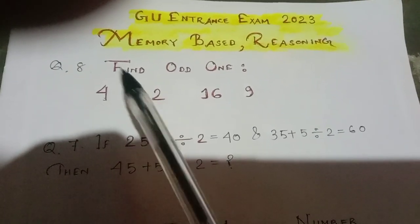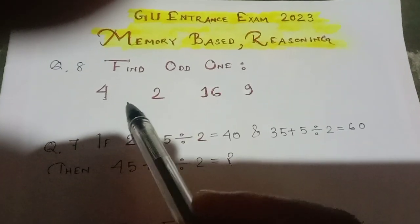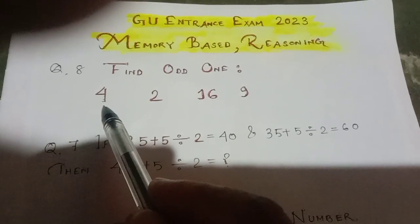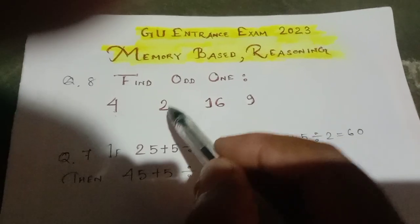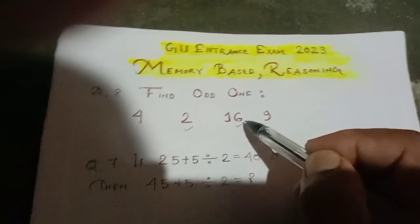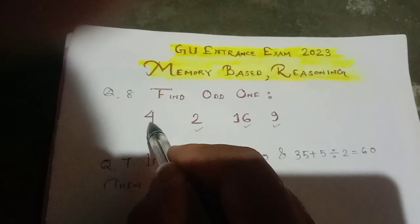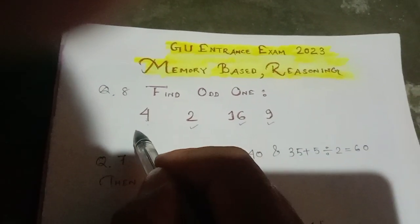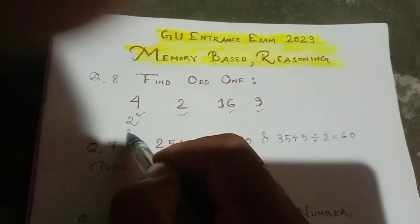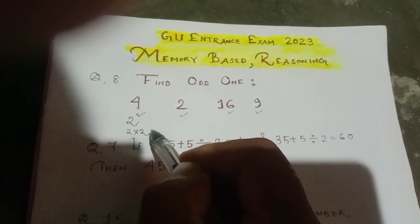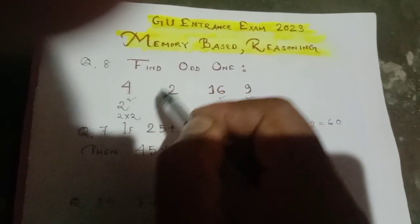The question is: find the odd one out. If you carefully watch these numbers — 4, 2, 16, and 9 — now if we take the square of 4, and 2 squared means 2 into 2 equal to 4.